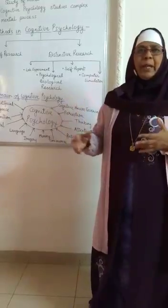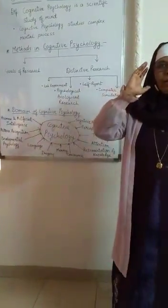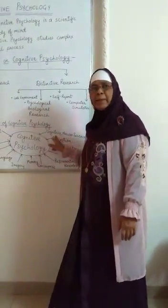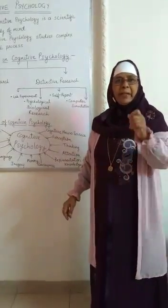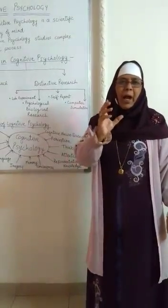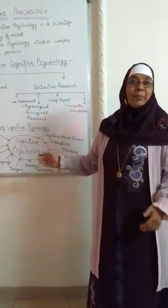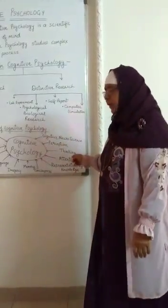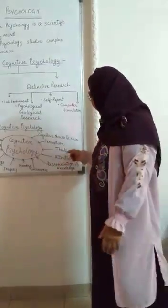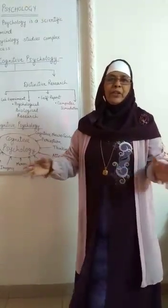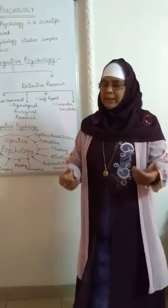Let us see the domain of cognitive psychology. Cognitive psychology studies cognitive neuroscience — related to the mind and brain, how the brain thinks, analyzes, and interprets. Perception is also a domain. For example, one glass is half filled — some people think the glass is half filled, others think it is half empty. That is perception — how people perceive the same thing differently. Thinking involves thought processes and how a person reacts to thinking. Attention is a process of selection — we have many stimuli but we attend to some because of our interest, desires, motives, and needs.